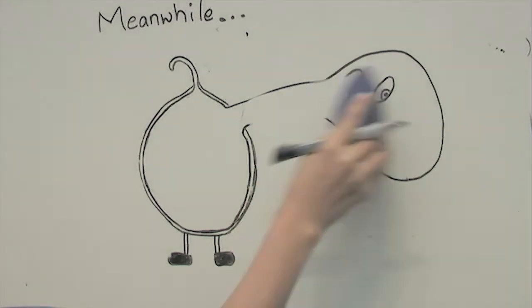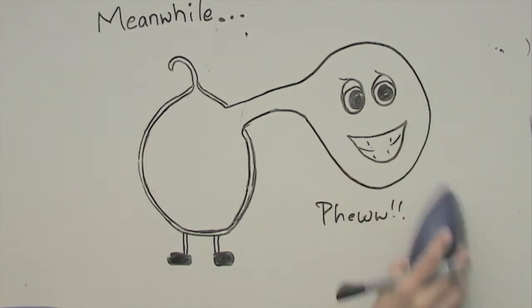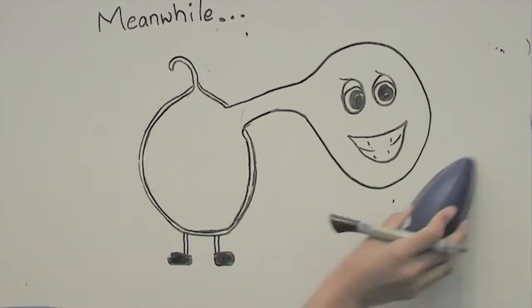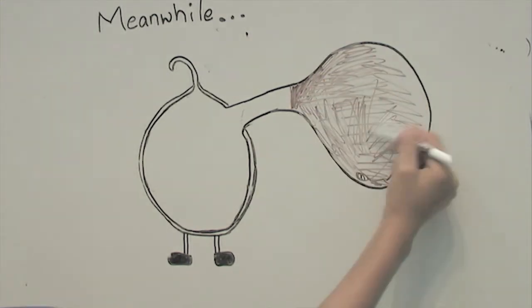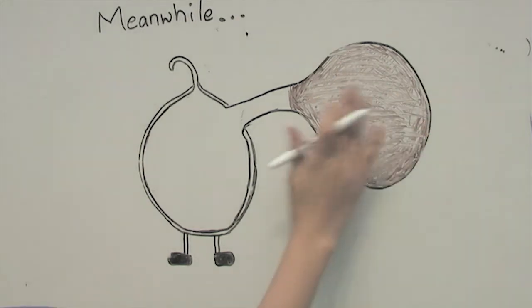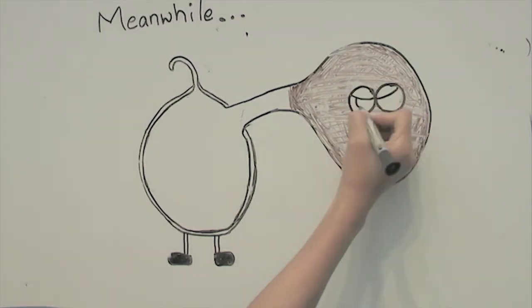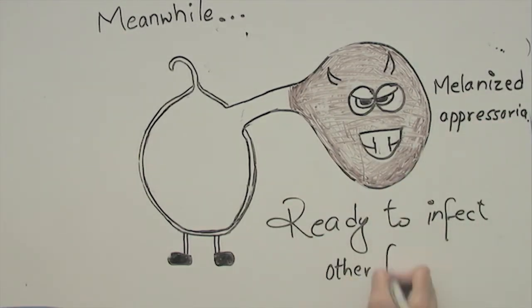And after a while, here's the appresoria. And it's like, phew, traveling is fun from conidia to appresoria. And after a few hours or a day, the appresoria starts melanizing. And that's what I'm trying to show here. Dark brown in color. It's the melanized appresoria ready to infect the fruits in surrounding canopies.